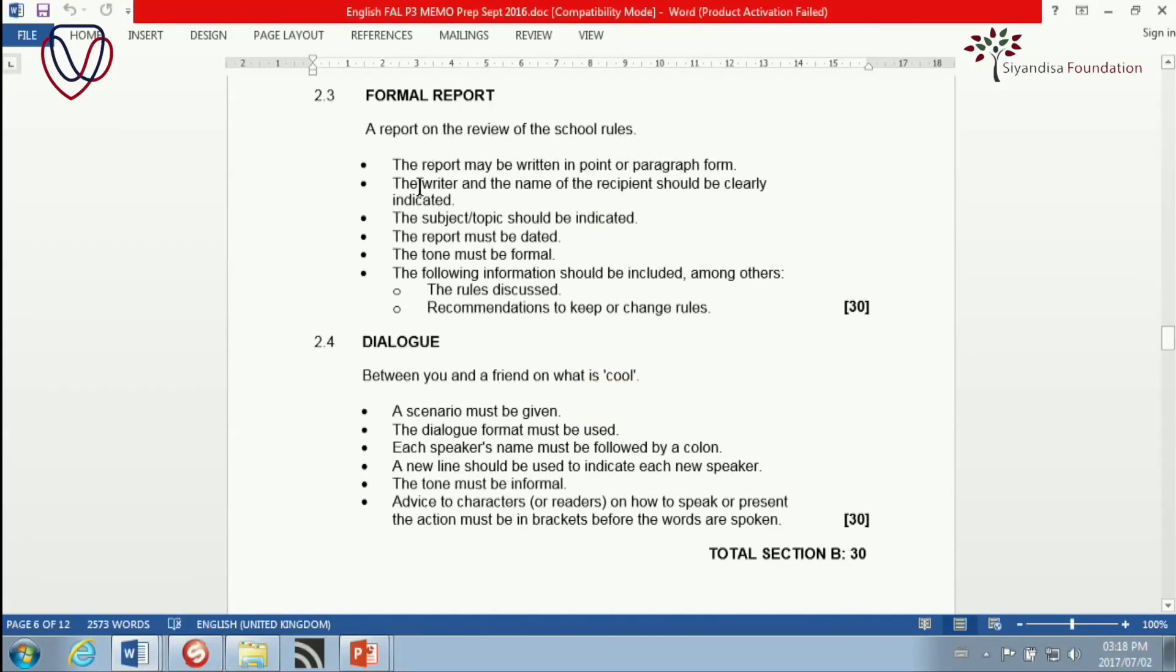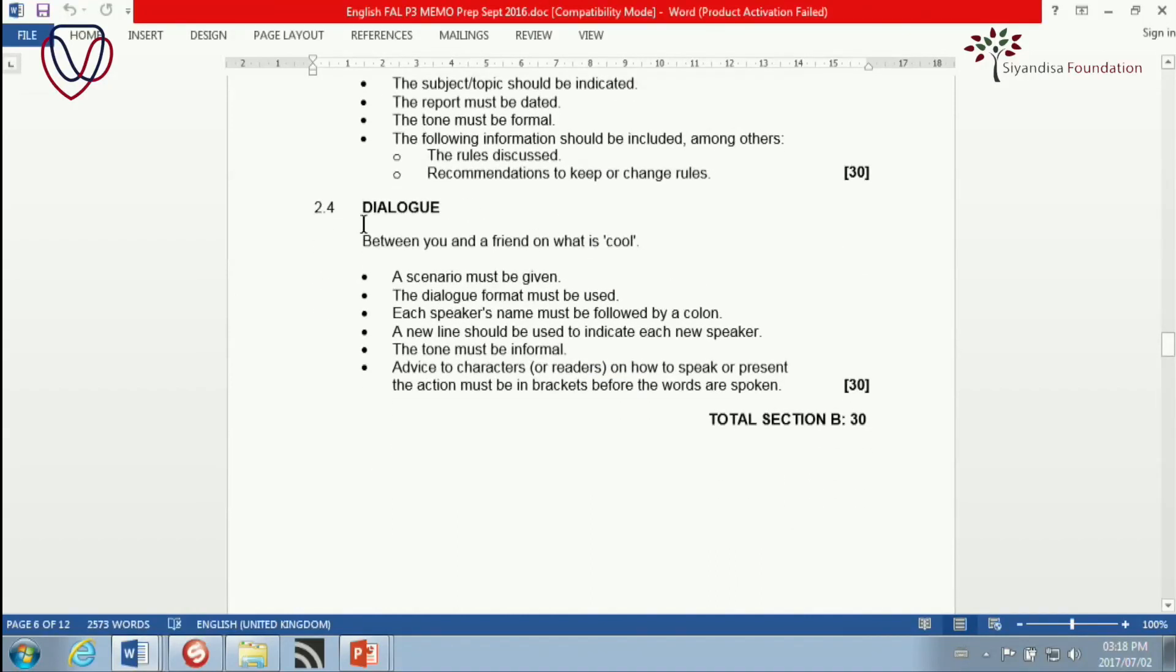Formal report. Report on the school rules. Report may be written in point or paragraph form. Writer and name of the recipient should be clearly indicated. Please, fake names. Remember that. The subject or topic should be indicated. Yes. Report must be dated. Tone must be formal. And the following information should be included among others. The rules discussed. Recommendations to keep or to change rules. That is logical. No booby traps there. That is exactly how you would expect it to be, I'm sure. Dialogue.